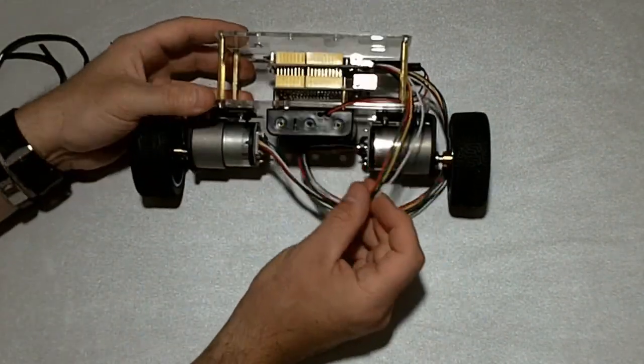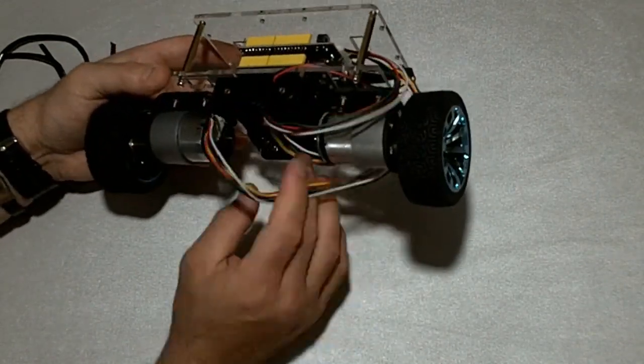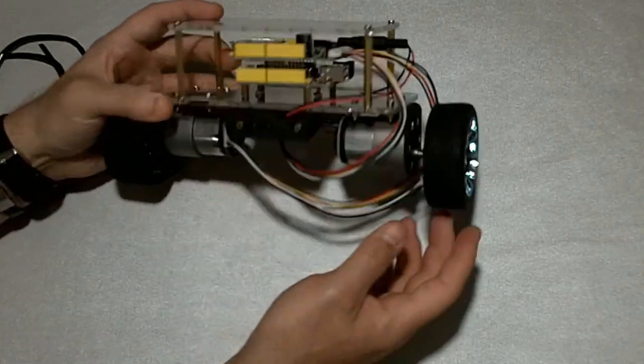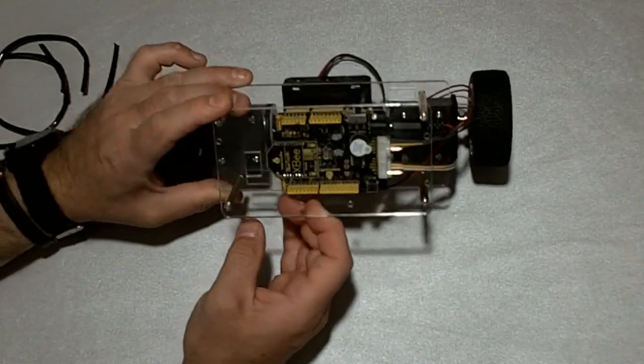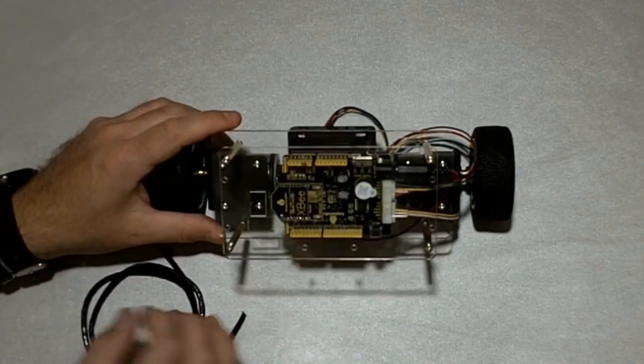And maybe I'll zip tie them to one of these pillars or something. Because right now they're kind of in the way. And when I start to run this thing I don't want to see the wires getting tangled on the wheels or getting caught on objects that happen to be in the path of the bot.